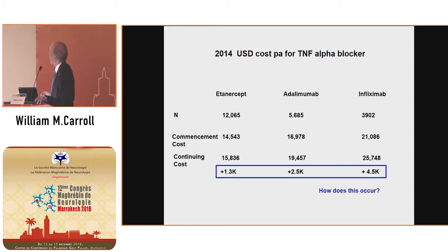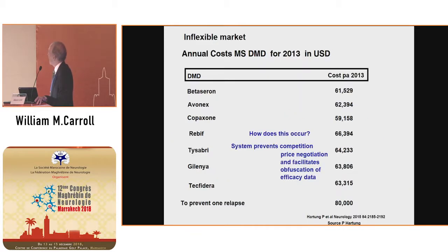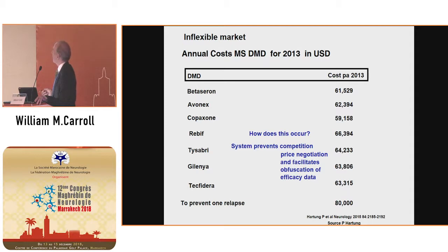Here's the treatment for rheumatoid arthritis with monoclonal antibodies. When these three were introduced, the cost was $14,000; the following year it went up to $15,000. Similarly, adalimumab went from $16,000 to $17,000 a year, up to $19,000. For MS drugs, the costs in 2015 for these common medications were all between $60,000 and $64,000 per year — they haven't come down at all. The main reason is they are in an inflexible market, and it's in the pharmaceutical companies' interest to keep it inflexible to maintain drug costs and profit.